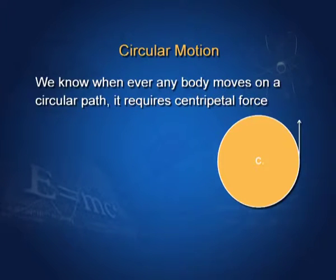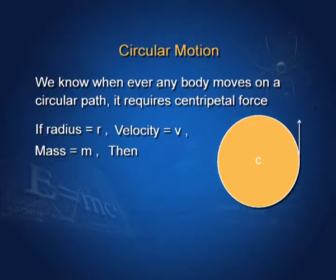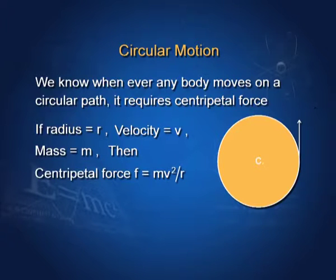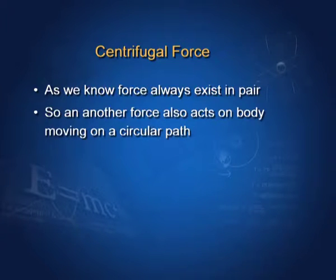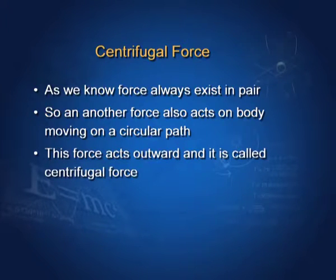Circular motion. When an object is moving on a circular path, it requires centripetal force. If a body of mass M is moving on a circular path of radius R with velocity V, then it requires centripetal force F equals to Mv² upon R. This force is always directed towards the center. As forces always exist in pairs, there should be another force in the opposite direction of centripetal force. That force is called centrifugal force.